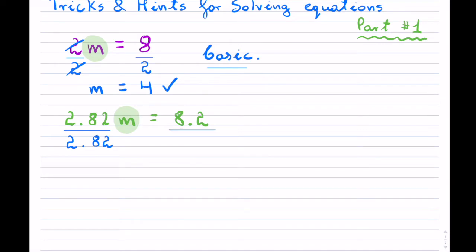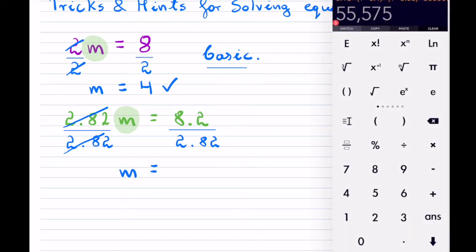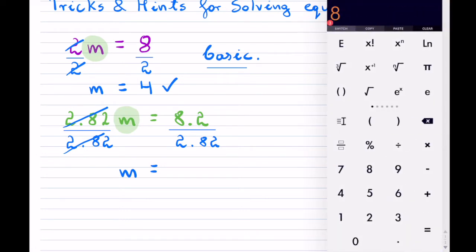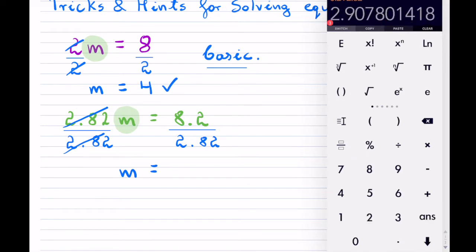You simply take the entire number and divide it on both sides. So I would divide by 2.82 on both sides. This won't be as easy to divide on the right-hand side because it's a decimal, so you can take out your calculator. The 2.82 cancels out and I'm left with m. So m equals 8.2 divided by 2.82.